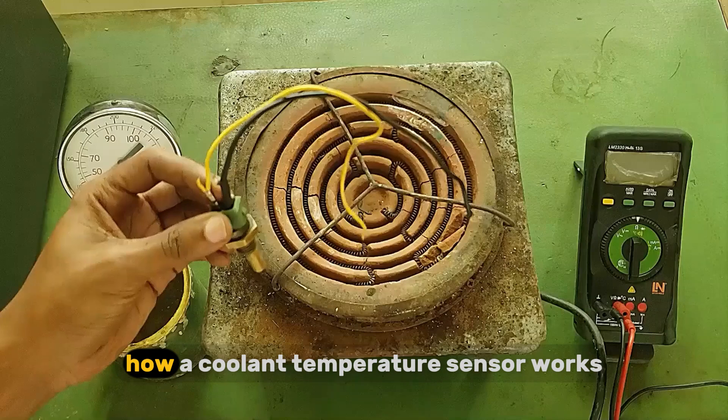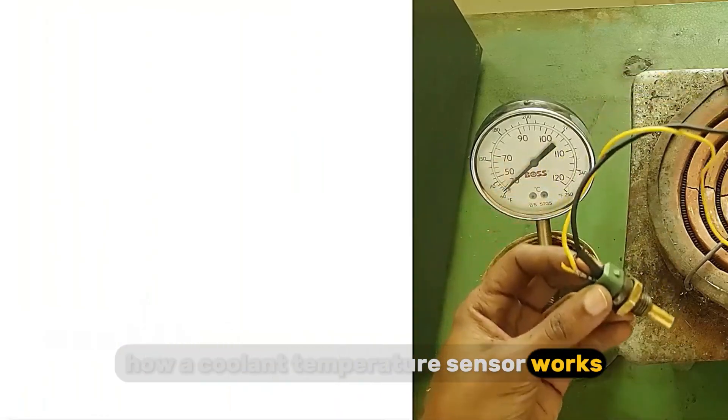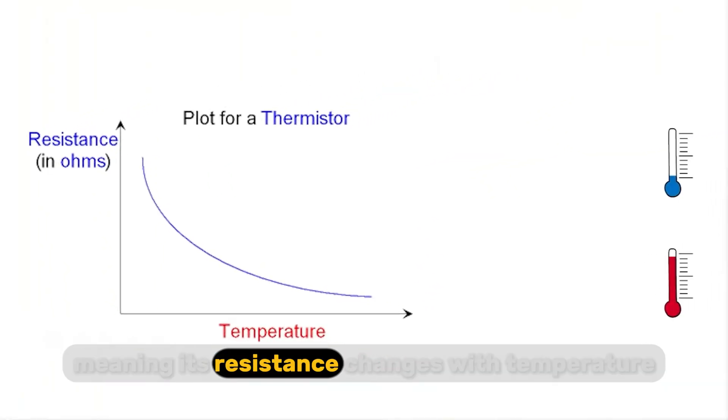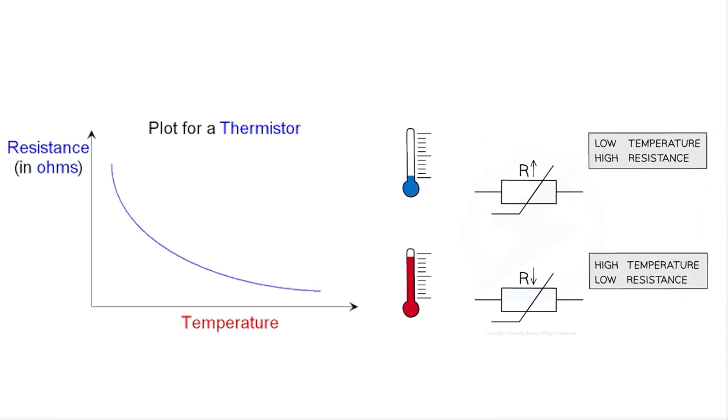Let's take a quick look at how a coolant temperature sensor works. This sensor is a thermistor, meaning its resistance changes with temperature. Most coolant temperature sensors are negative temperature coefficient NTC, meaning resistance decreases as temperature increases.